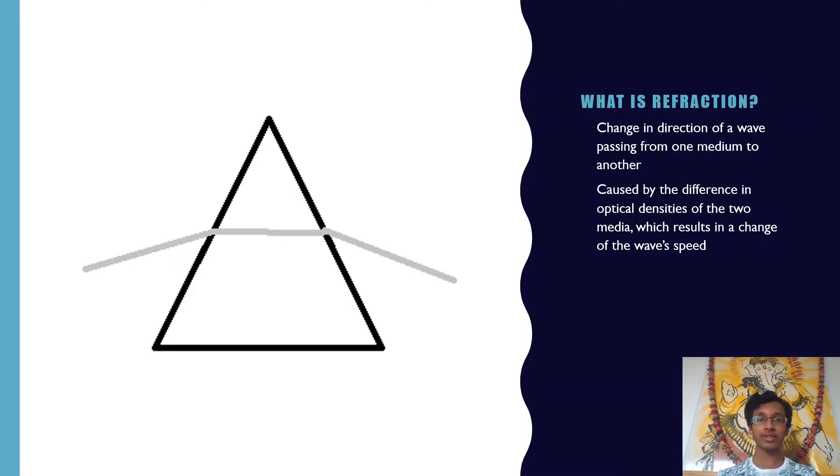Let's start with what refraction is. Refraction is defined as a change in direction of a wave when passing from one medium to another. It is caused by the difference in optical densities of the two media, which results in a change of the wave speed.